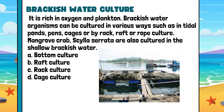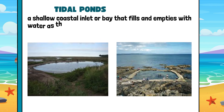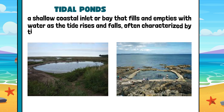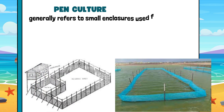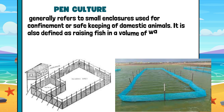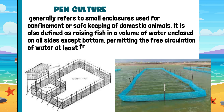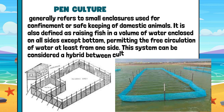Brackish water culture methods include: A. Bottom culture, B. Raft culture, C. Rack culture, D. Cage culture. Tidal ponds are shallow coastal inlets or bays that fill and empty with water as the tide rises and falls, often characterized by tidal flats and marshes. Pen culture generally refers to small enclosures used for the confinement of fish. In aquaculture, it is defined as raising fish in a volume of water enclosed on all sides except the bottom, permitting free circulation of water from at least one side. This system can be considered a hybrid between pond culture and cage culture.